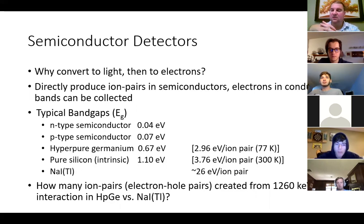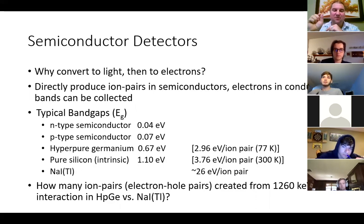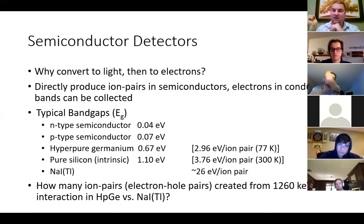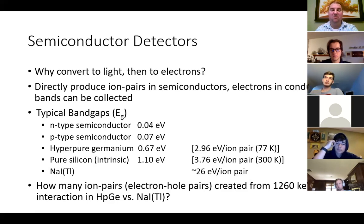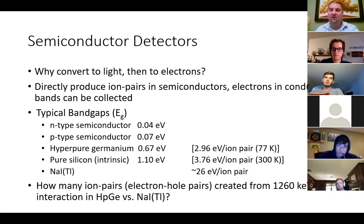Germanium detectors require liquid nitrogen, operating at 77 K where it takes just under 3 eV to create a collectible ion pair. Silicon at room temperature requires 3.76 eV per ion pair and can generally be operated without cooling. Hyperpure germanium must be cooled; at room temperature, thermal promotion of electrons via the Boltzmann distribution fills the conduction band with too many thermally-excited charge carriers, making the detector non-functional.